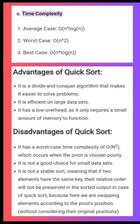Quick sort is not a good choice for small data sets. It is also not a stable sort, meaning that if two elements have the same key, their relative order will not be preserved in the sorted output.